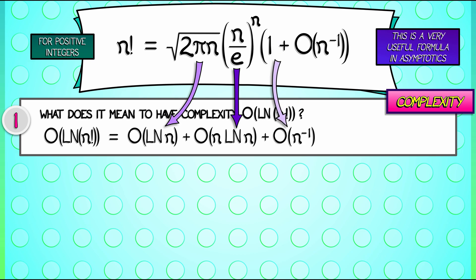Now, among these three terms, it's the middle one that dominates. So, big O of log of n factorial is really in big O of n log n. And that's a lot more descriptive.